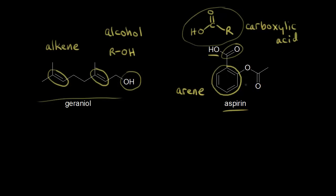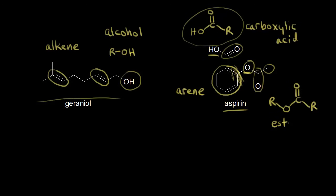Our next functional group: we have an oxygen directly bonded to a carbonyl. On one side of the carbonyl we have that oxygen with the rest of the molecule, and on the other side we have another R group. So that is an ester — R-O-C(=O)-R is an ester. There's an ester functional group present in the aspirin molecule.